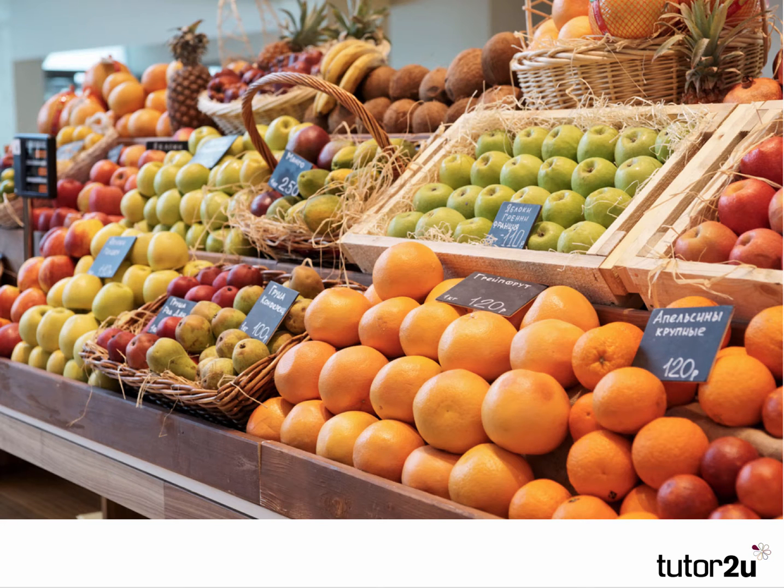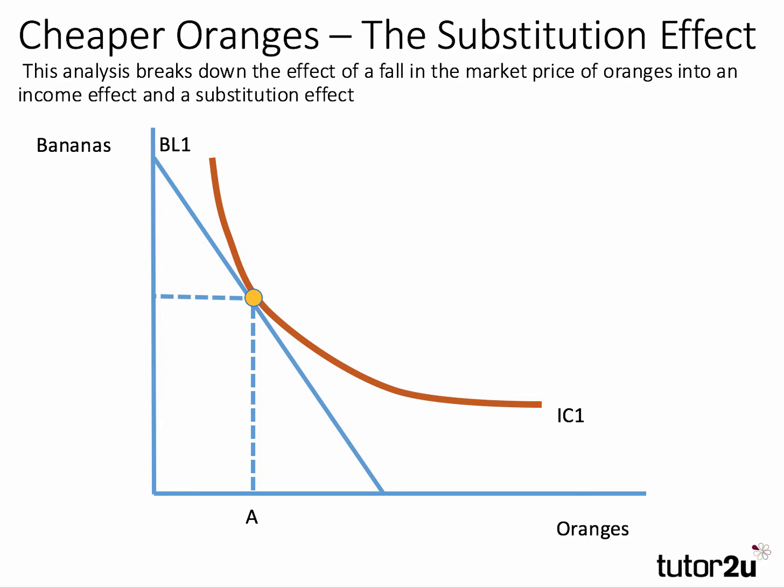Let's take the example of a change in the price of an everyday product — fresh oranges in a supermarket or a market store. Here's the way we would show the income and the substitution effects of a fall in the price of oranges. The consumer is making a choice between bananas, whose quantity consumed is on the y-axis, and oranges, whose quantity consumed is on the x-axis.